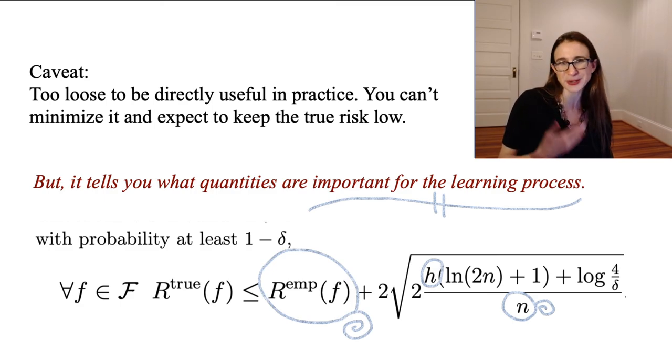And so that's how this bound is important. It tells you what the important quantities are for the learning process, right? Empirical risk, amount of data, and the simplicity of your model class. And so now we've formalized simplicity and showed that it can help you get a lower test risk in this very, very general setting.